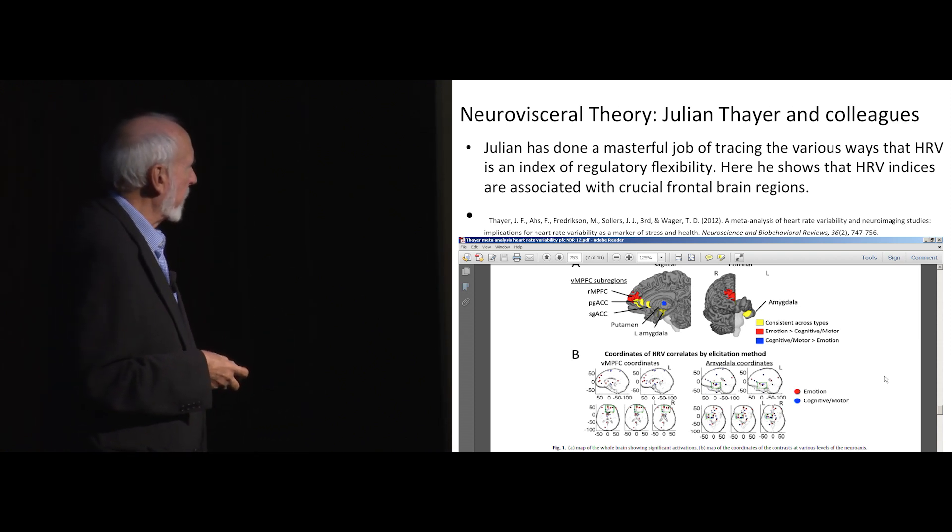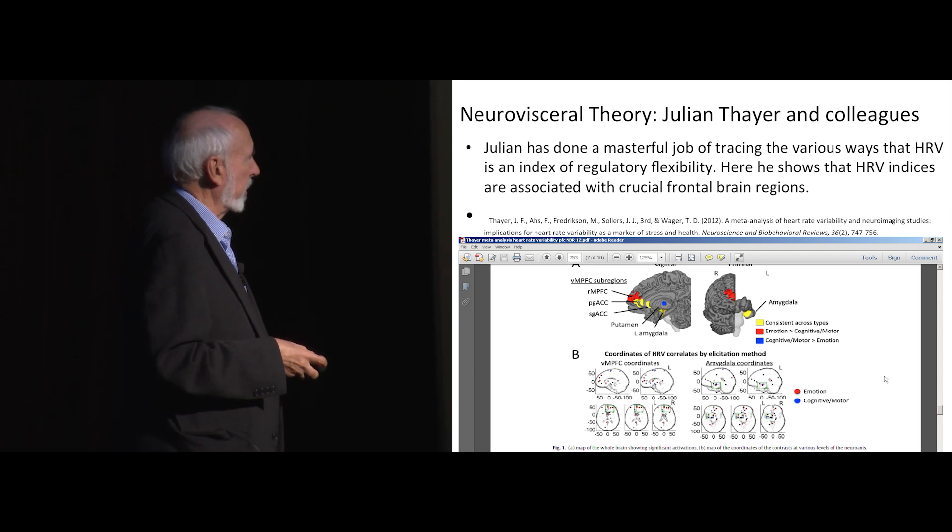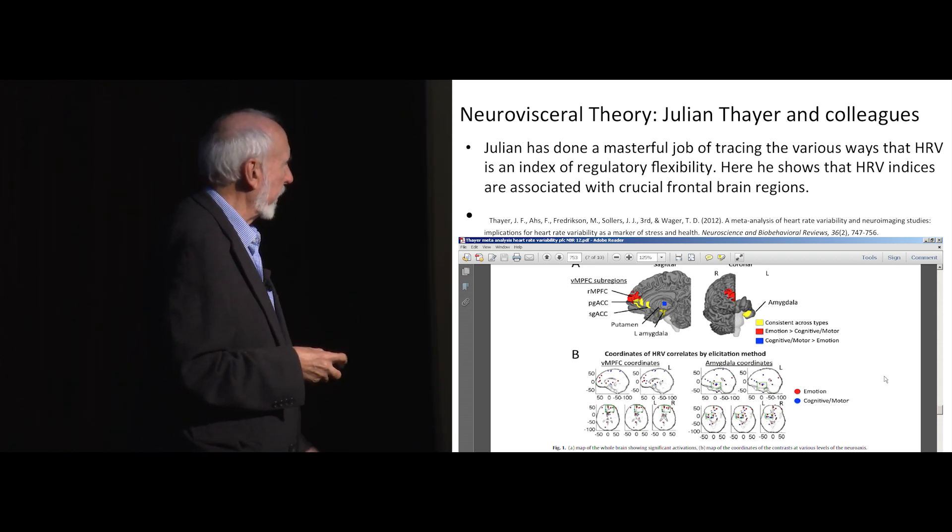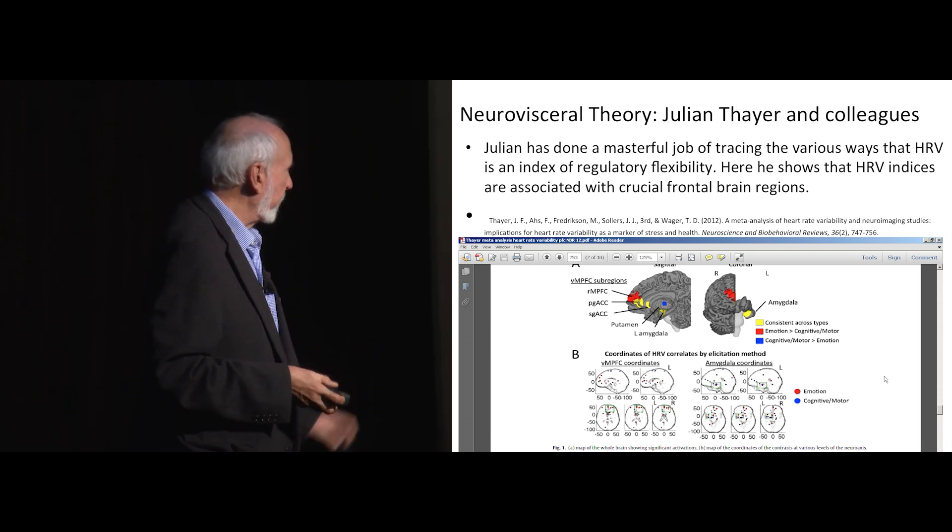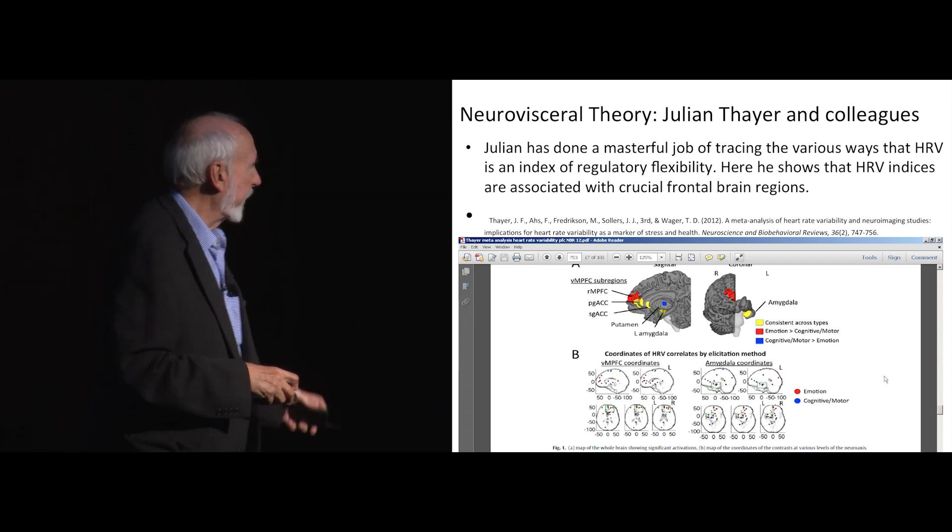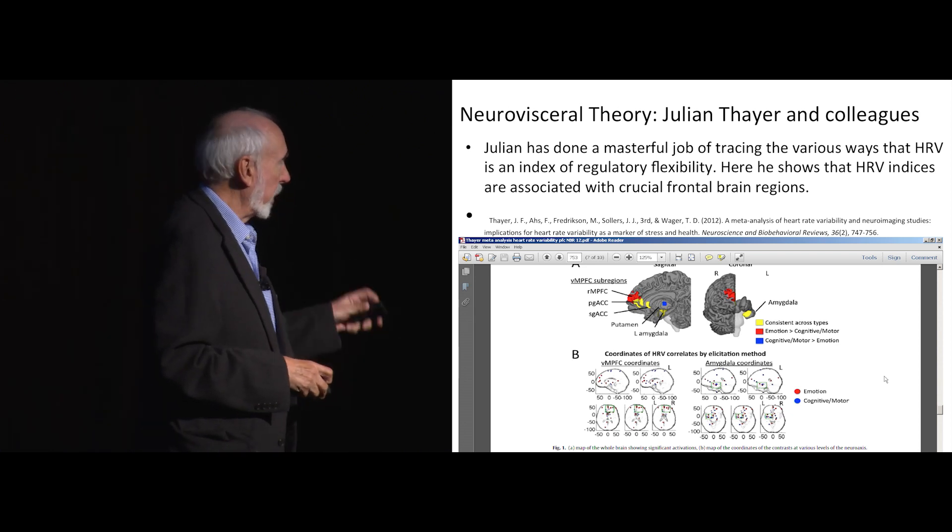Julian Thayer and his colleagues have just done a masterful job of trying to look at this index of heart rate variability and how it relates to a number of frontal structures in the brain. And here you can kind of see this is a meta-analysis of a number of MRI studies looking at the relationship between different stimuli, emotional stimuli, motor stimuli, and different very important frontal areas in the brain, even reaching into the limbic system. And if you're interested in this, you should read Julian's work. It's really brilliant and wonderful and incredibly far-reaching.